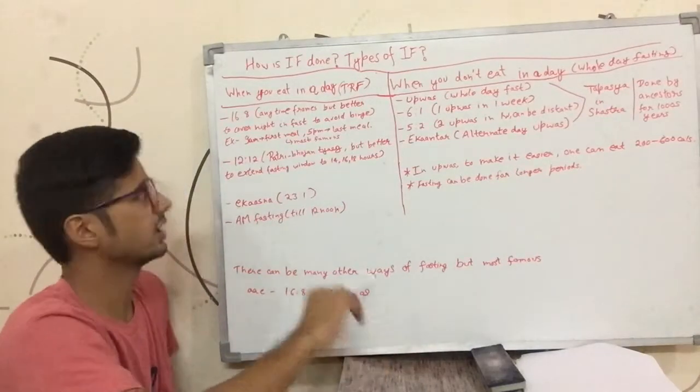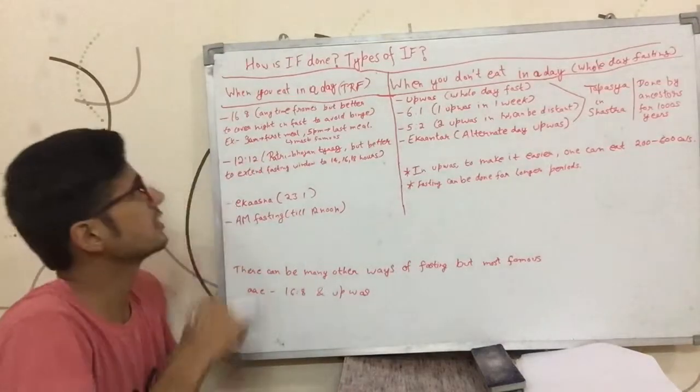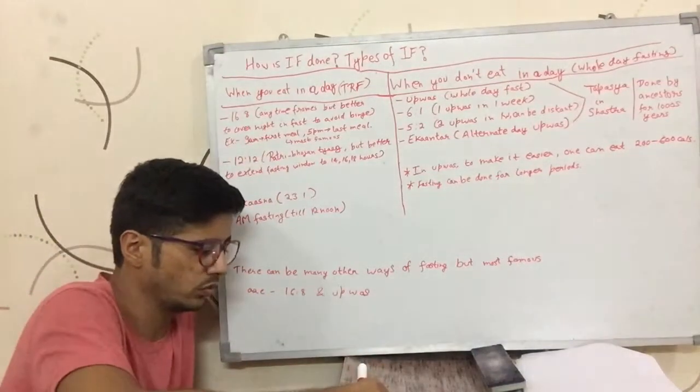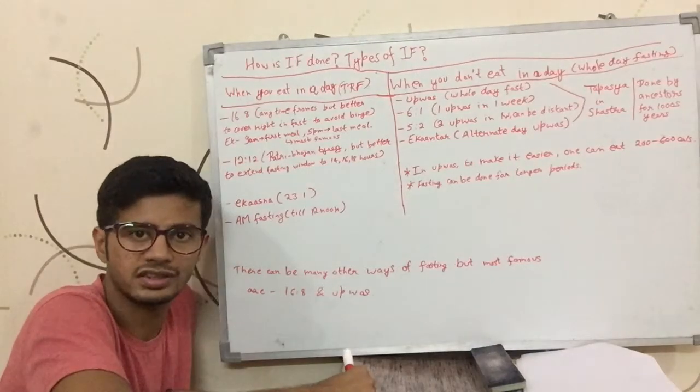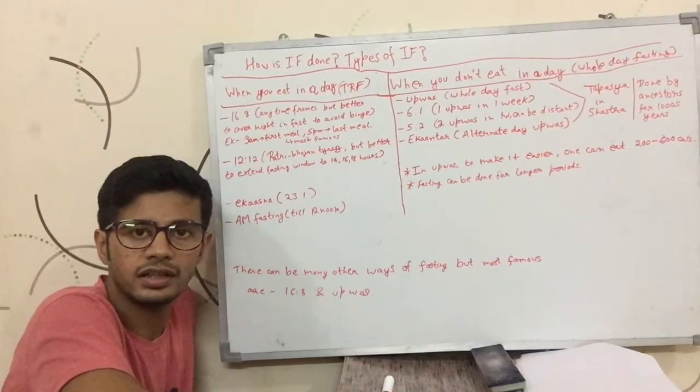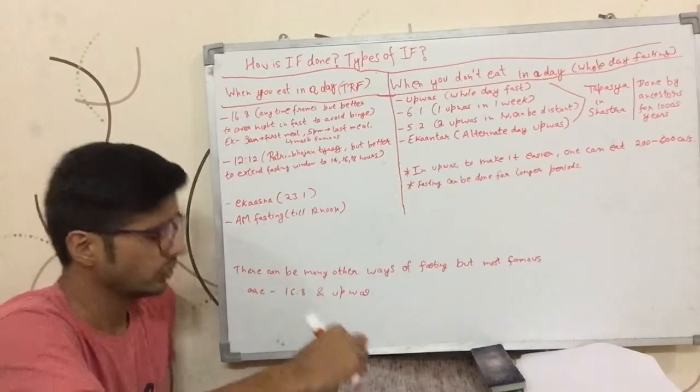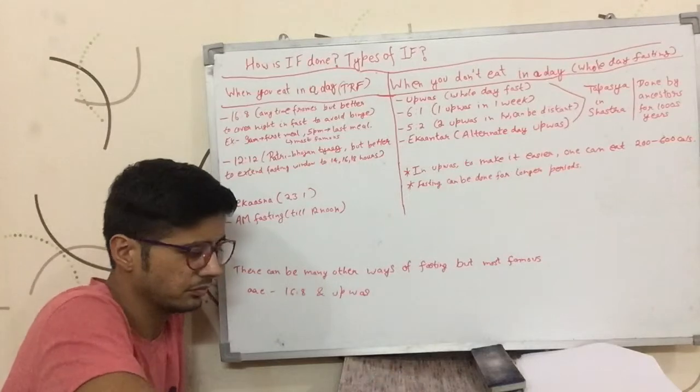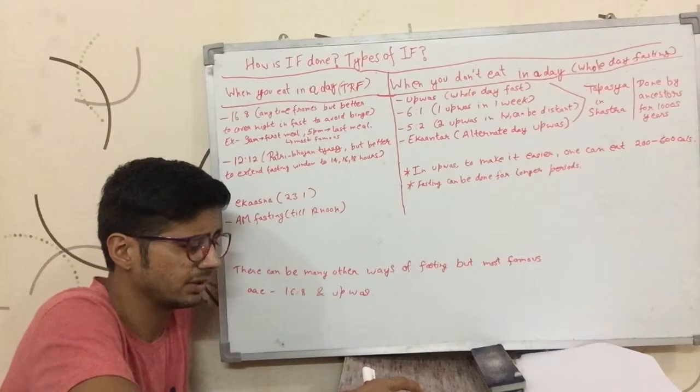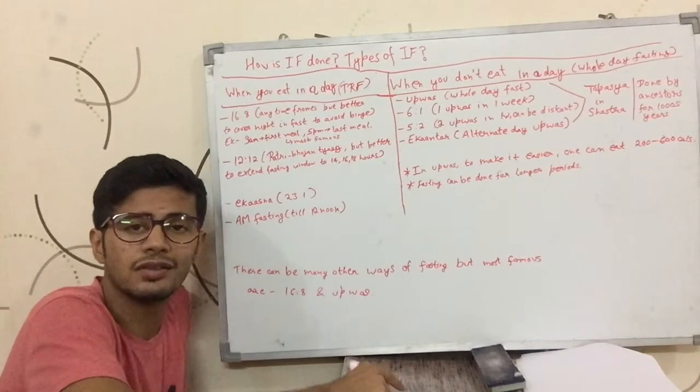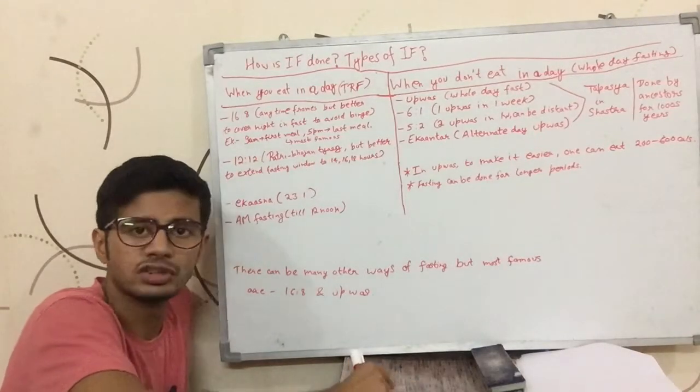First, let's talk about time-restricted fasting. One of the most famous methods is 16:8, where out of 24 hours in the day, you will not eat anything for 16 hours and you'll eat your food in an 8-hour window. For the fasting time of 16 hours, you can pick any time frame of the day, but it is highly advisable that you pick a time frame that covers the nighttime.